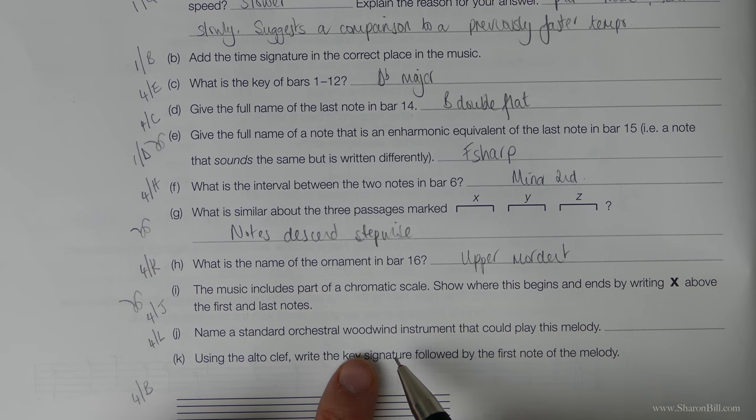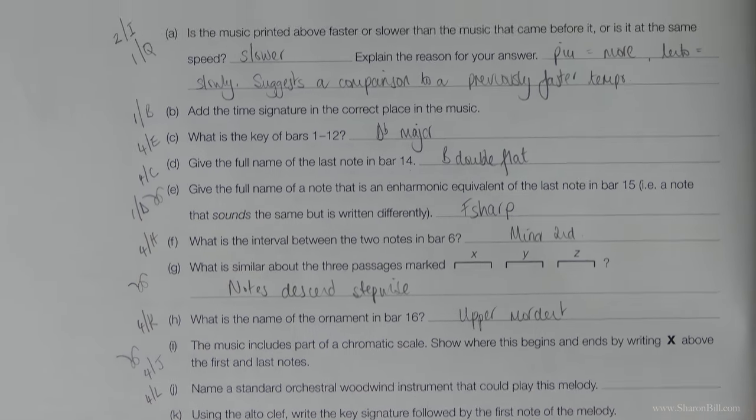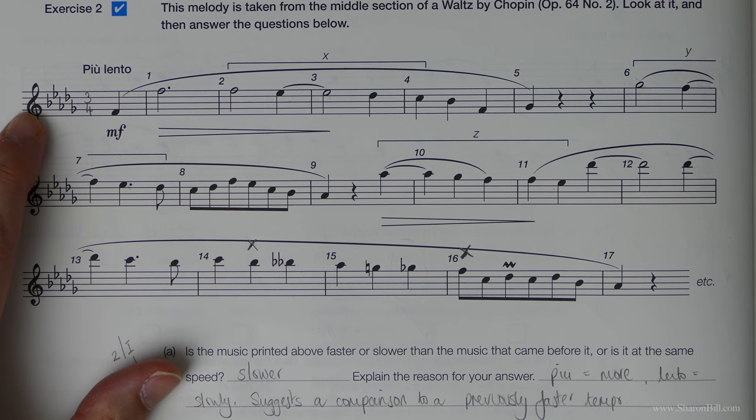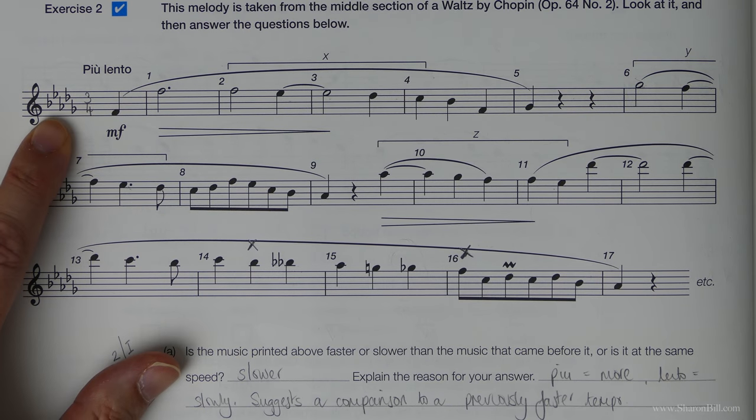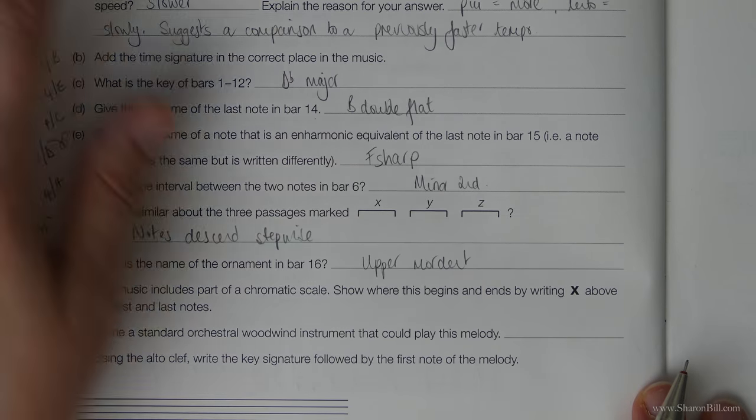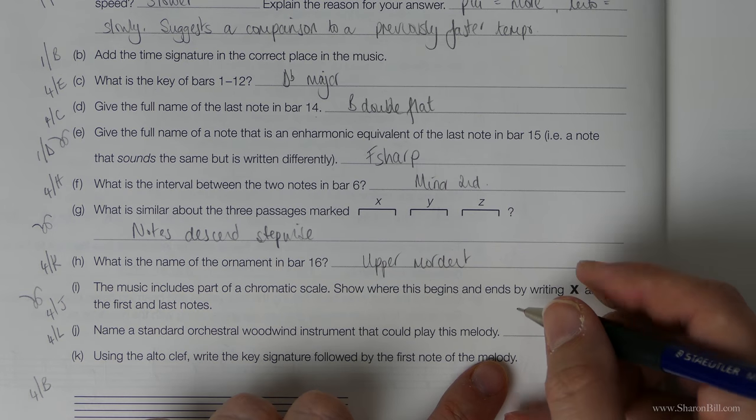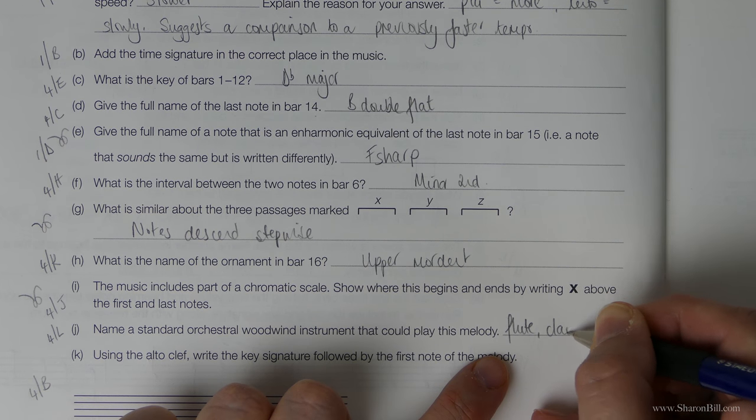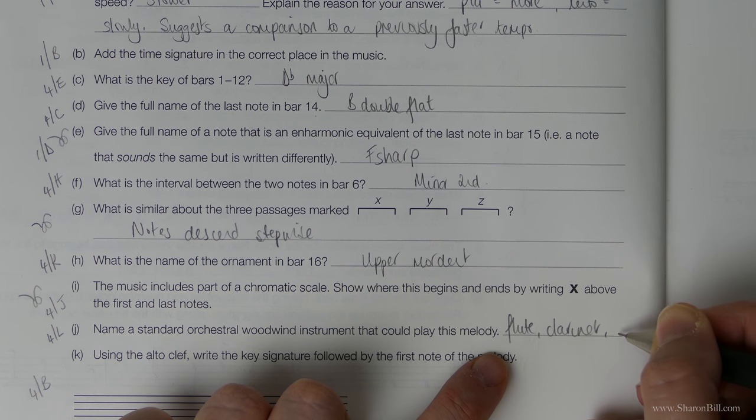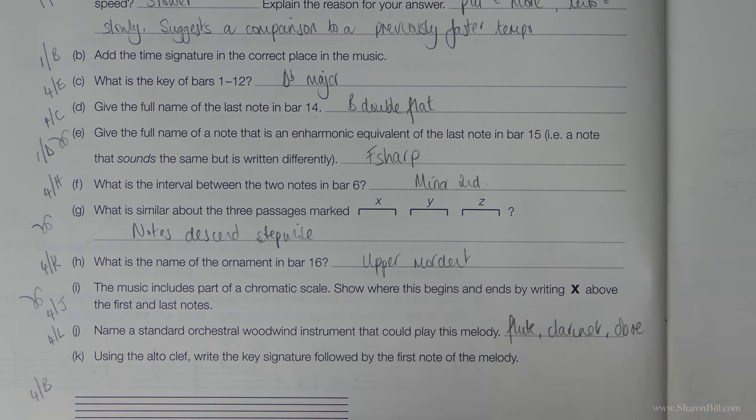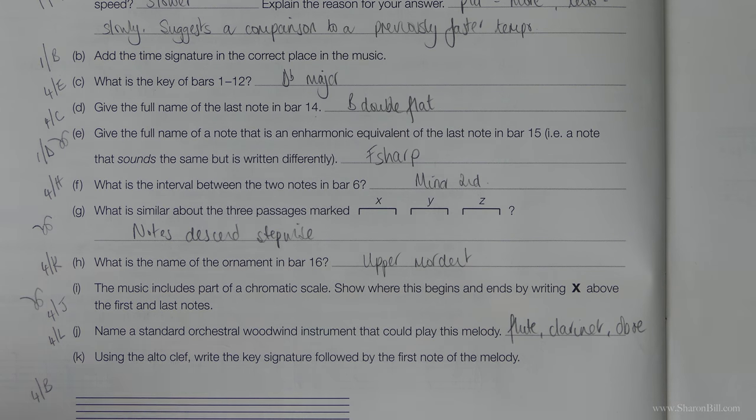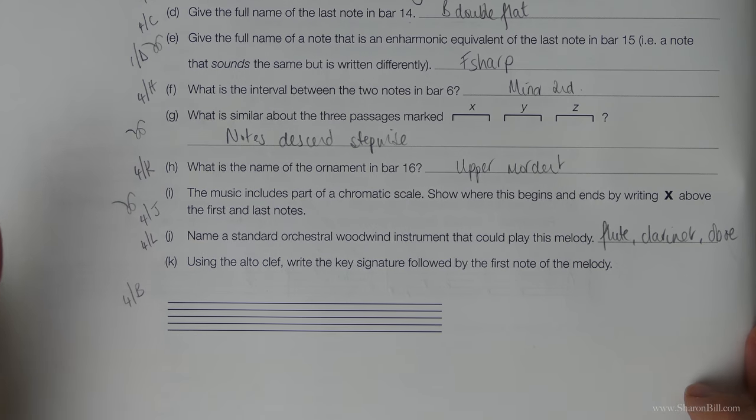Name a standard orchestral woodwind instrument that could play this melody. So you need to make sure that you're choosing a woodwind instrument that would play in the treble clef. And so you could suggest either flute, that's the highest, or clarinet, that would also be acceptable. So would oboe. Bassoon is not, because that would be bass clef. Righty-ho, last one.